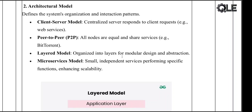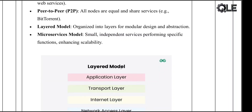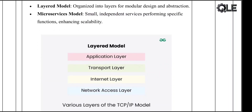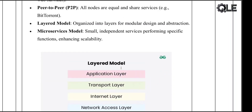Layered model: the system is organized in layers, and each layer has a specific job, making the system easier to manage. Microservices: the system is broken into small independent services, each service does one job really well, making the whole system easier to scale and maintain. The architectural model is like the blueprint of a building, showing how each part of the system is supposed to work together.